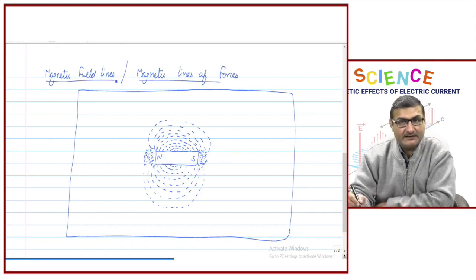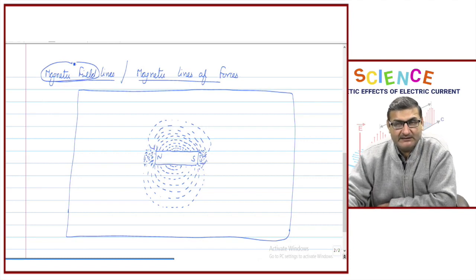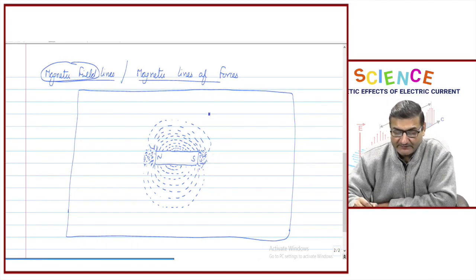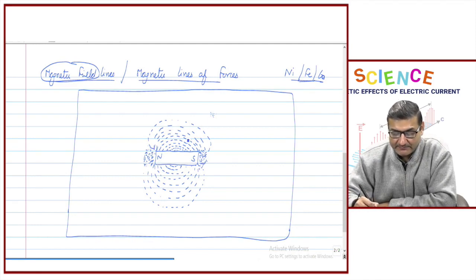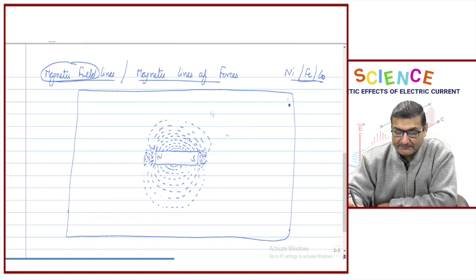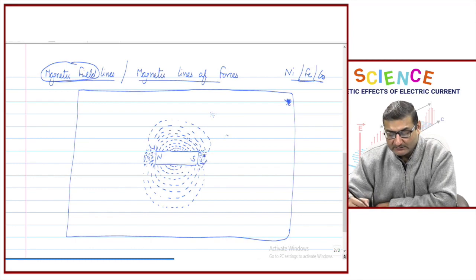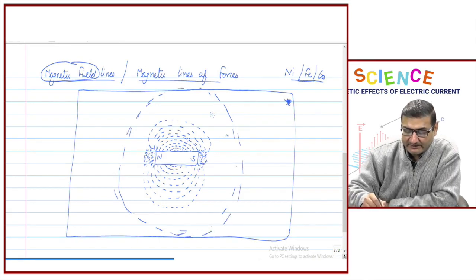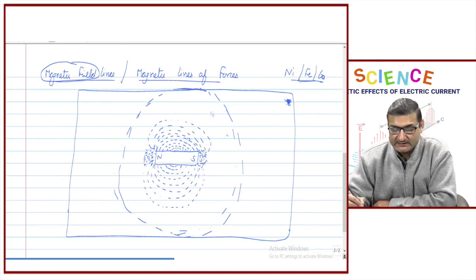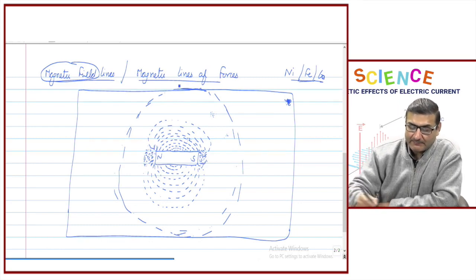Magnetic field is the area in which the effect of a magnet can be felt. For example, iron, nickel, and cobalt are magnetic substances that can be attracted by magnets. If you place such a substance close to the magnet it will be attracted, but at a greater distance the magnet will not be able to attract it, because the effect is felt only within a particular area. That area is called the magnetic field.